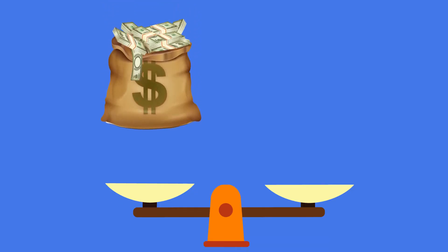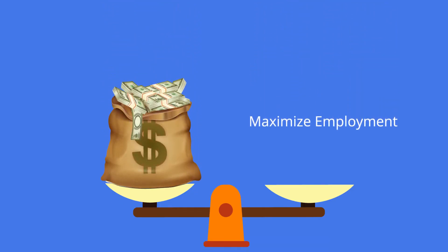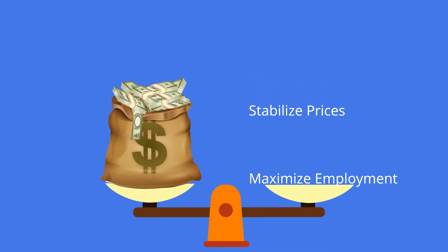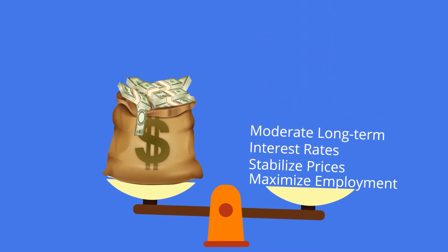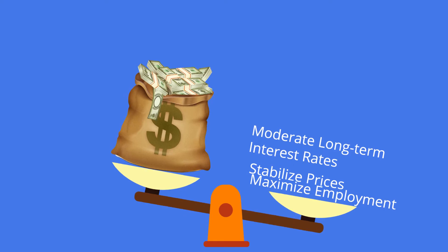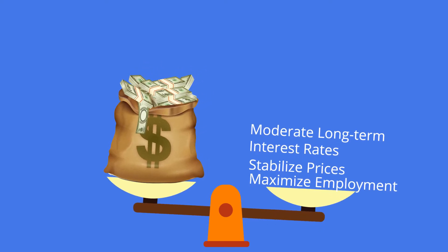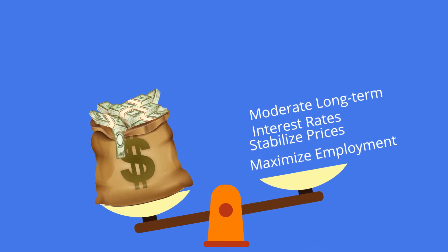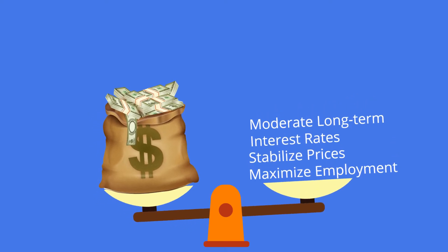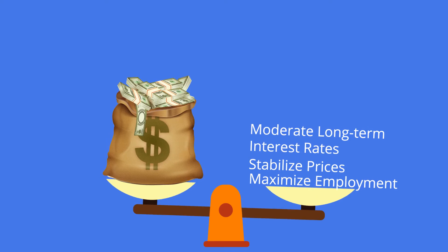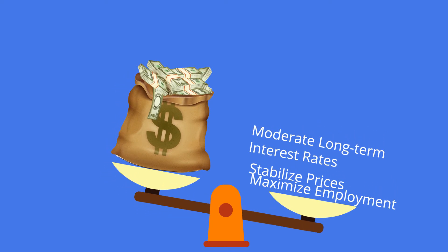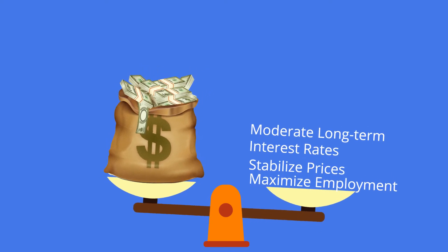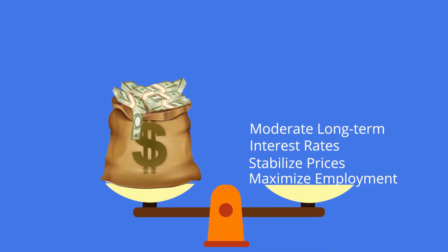Monetary policy is essentially the way in which the Federal Reserve controls the quantity of money in the economy and the avenues in which new money is injected into it. The Fed's motivation in conducting monetary policy is in following the mandate by Congress to fulfill three goals: maximize employment, stabilize prices, and moderate long-term interest rates. This directive is satisfied when citizens who are looking for work are gainfully employed and when the prices for goods and services are comparatively stable.